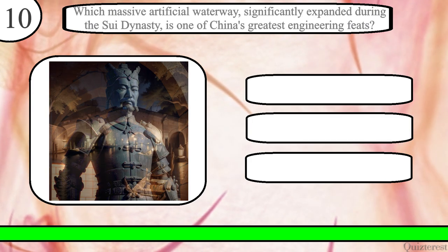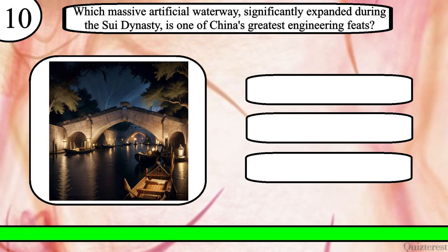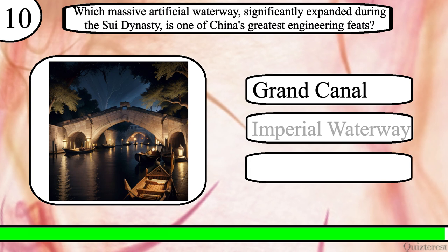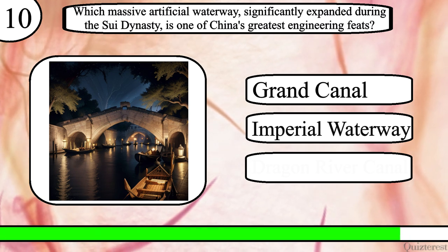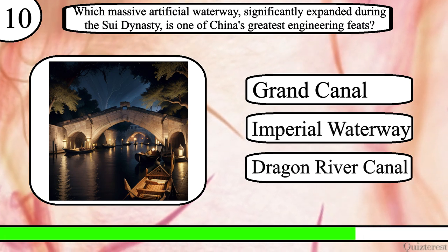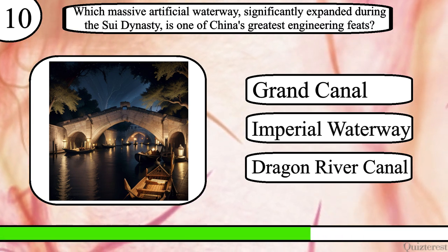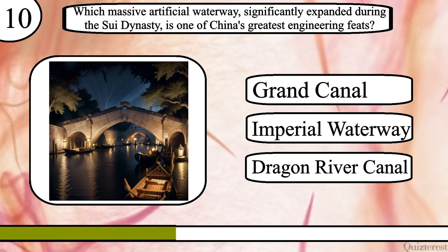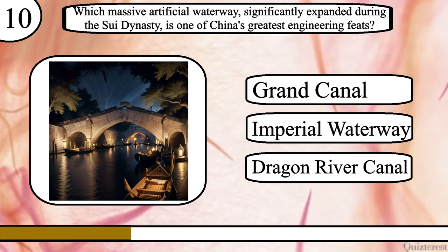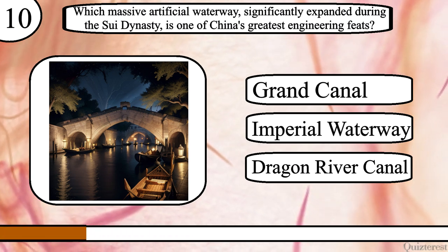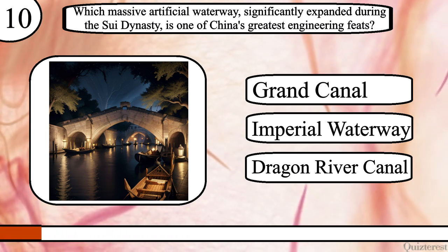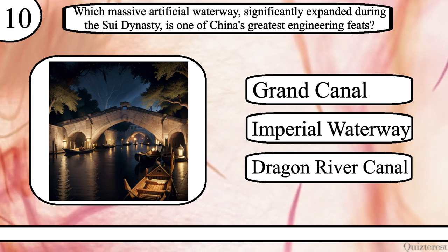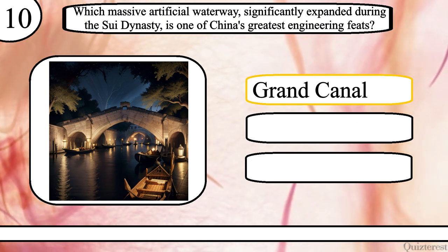Question 10. Which massive artificial waterway, significantly expanded during the Sui dynasty, is one of China's greatest engineering feats? Grand Canal, Imperial Waterway, or Dragon River Canal? The correct answer is Grand Canal.